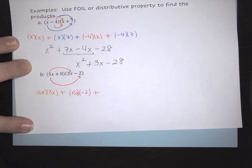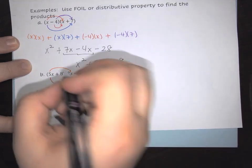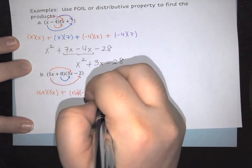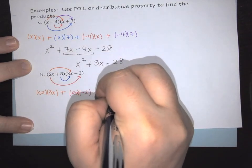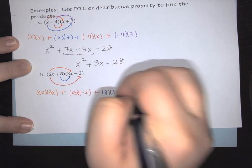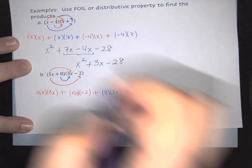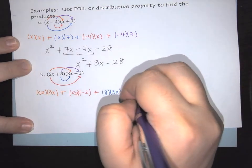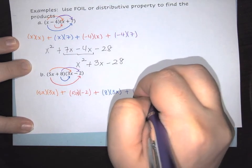We're going to add it to the next in your list, which is your innermost terms, these two on the inside. So this is 8 times my 3X. And we're going to add it to your last terms, these outer two. So this is going to be 8 times negative 2.